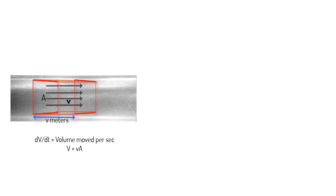If we have a setup like this where water is flowing through this area A with velocity v, we say that the volumetric flow rate of water is dV/dt which is equal to v times A.